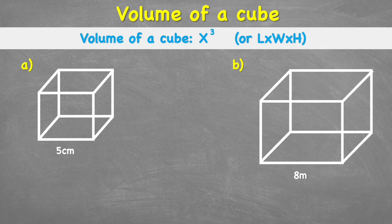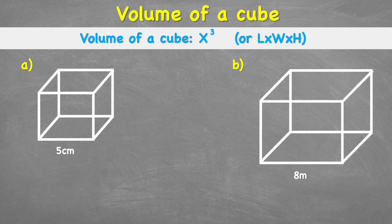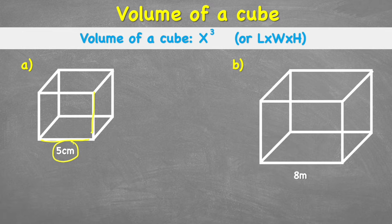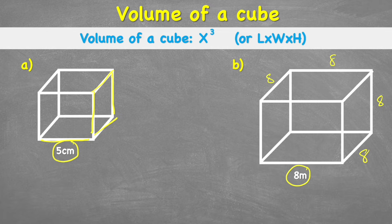We can see these two examples here in front of us. What we should know about a cube is that a cube is made up of six identical square faces. We're only given one measurement for each of these cubes, but that's fine because we know that this five centimetres for the length will be the same for all of the lengths on this cube. Same with example B — we have eight centimetres, and that'll be eight centimetres for all of the measurements.